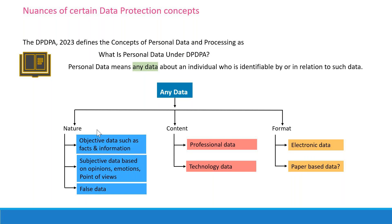The data has to be about a person, and it can be either directly identified data or identifiable data — it has to be related to an individual. By nature it can be different types; not necessarily non-technical data — technology data like IP addresses and cookies can also fall under this definition.